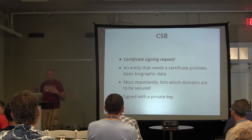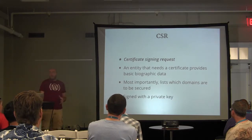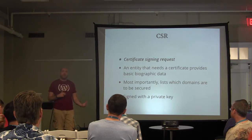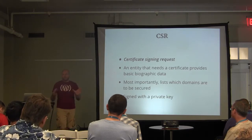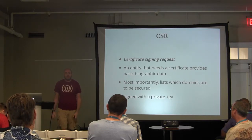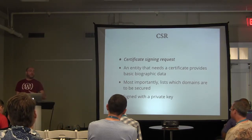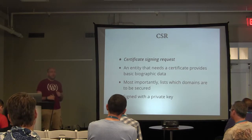A Certificate Signing Request is another one of these agreed-upon formats. It includes basic information about the entity — its name, its location. Most importantly, it lists the domains that the certificate should cover, because there's this verification that you have some sort of authority to use this domain. In this CSR you say: I am this organization or individual, I am located in this place, and I would like to secure this set of domains. That information all gets rolled up into the CSR and provided to the certificate authority, which has the information they need to verify your ownership and give you back that leaf certificate.